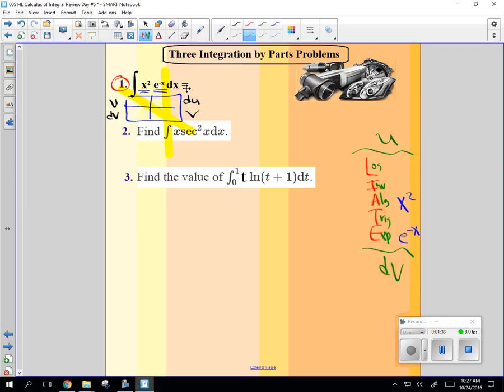All right, next. We said that the x squared is top, closest to U. So that's going to be my U. And what's DV? What am I going to choose for DV? E to the negative x dx.